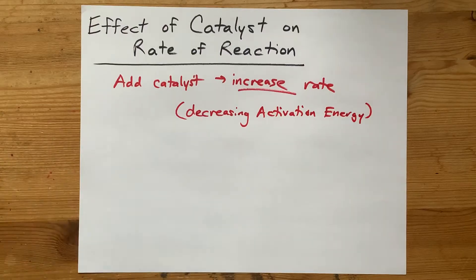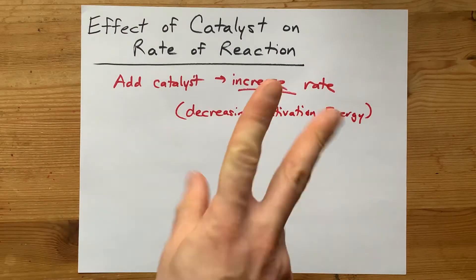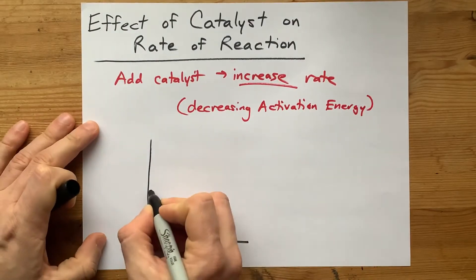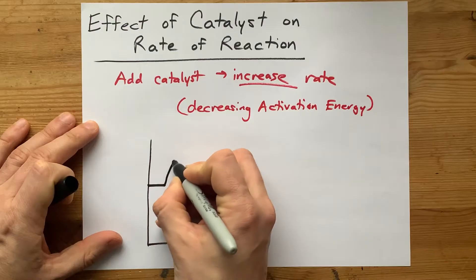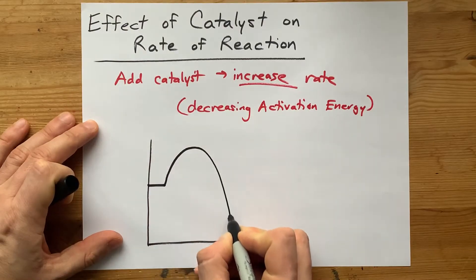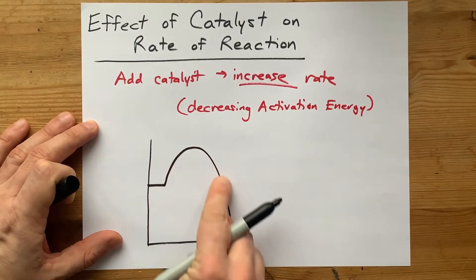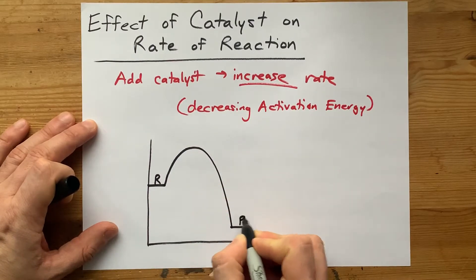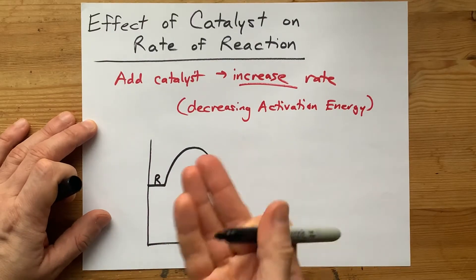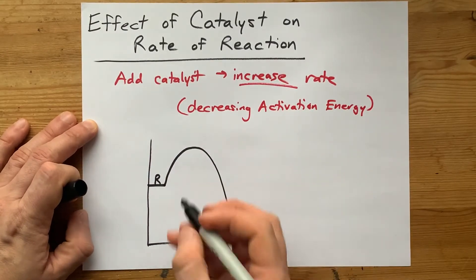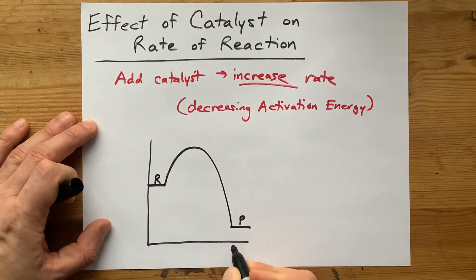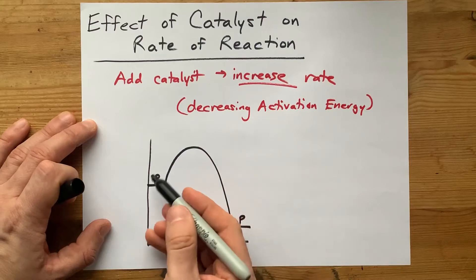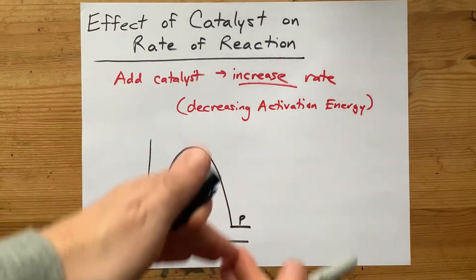What your teacher may want you to show to demonstrate your understanding here is one of those curves that shows reactants, and then there's a hump of energy you have to get over in order to make those reactants turn into the products. The rate of the reaction is generally based off of how high this hump is. The higher the hump, the less chance you have that the reactants are going to collide with enough energy to get over the hump.